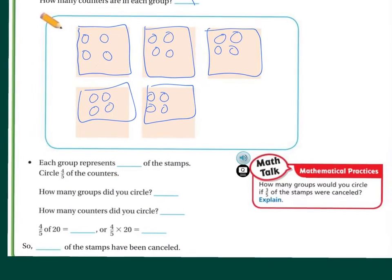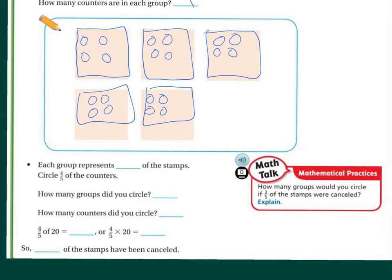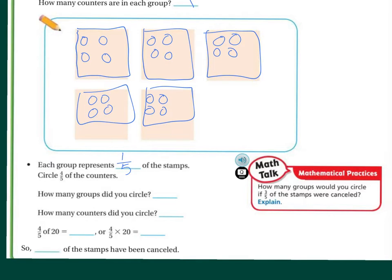Each group represents a fraction of the stamps. Counting through the groups: one-fifth, two-fifths, three-fifths, four-fifths, five-fifths. So each of these little groups represents one-fifth of the stamps.